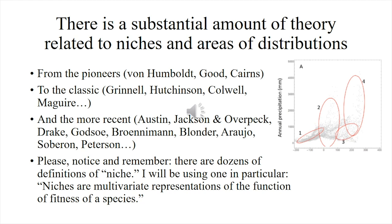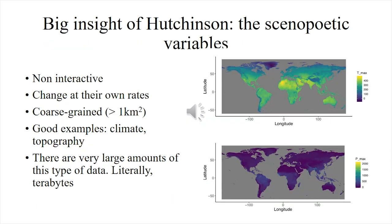The first thing I need to stress is that there are dozens of definitions of niche, and in this talk and basically in the entire course we will be using one in particular, which is different from the one that most ecologists are familiar with. The definition we're going to use is: niches are multivariate representations of the function of fitness of a species, meaning that different parts of environmental space produce different fitness values for a population experiencing those conditions. I am going to be using just certain types of environmental variables, which are what Hutchinson calls xenopoetic variables — variables that are non-interactive. They change at their own rates and tend to be coarse-grained. The best examples are climate and topography. And there are tons of these types of data, literally terabytes.